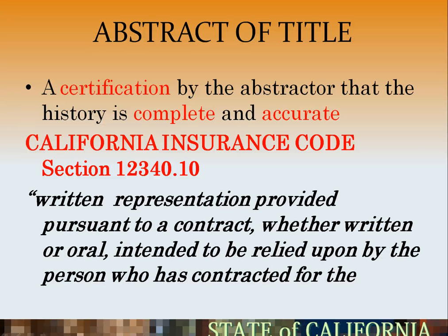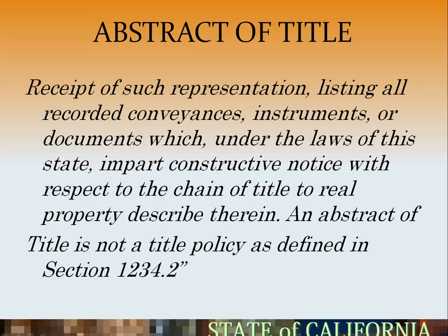According to California Insurance Code Section 12340.10, it is a written representation provided pursuant to a contract, whether written or oral, intended to be relied upon by a person who has contracted for the receipt of such representation, listing all recorded conveyances, instruments, or documents which, under the laws of this State, impart constructive notice with respect to the chain of title to real property described therein.